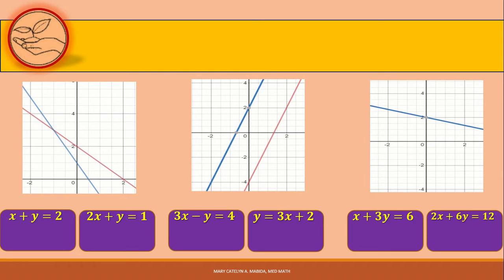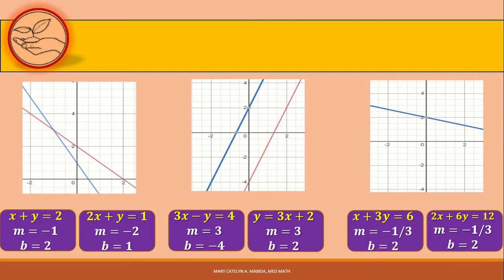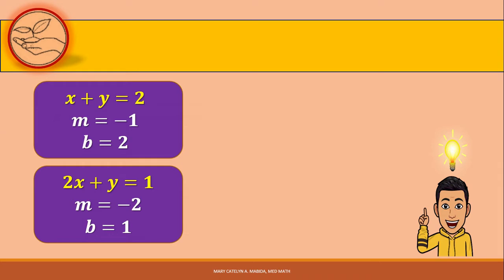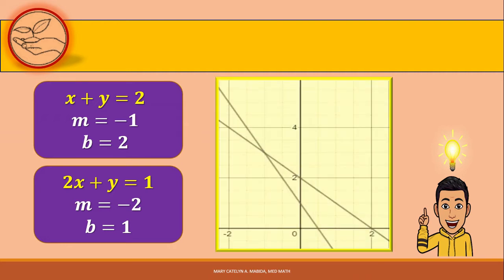Let us go back to getting the slopes, which are the m values, and y-intercepts, which are the b values. How would you compare the slopes of the lines defined by the linear equations in each system? And how about their y-intercepts? For the first system, we can see that the slopes are different: m is equal to negative 1 and m is equal to negative 2. We can also see that the y-intercepts are also different: b is equal to 2 and b is equal to 1.